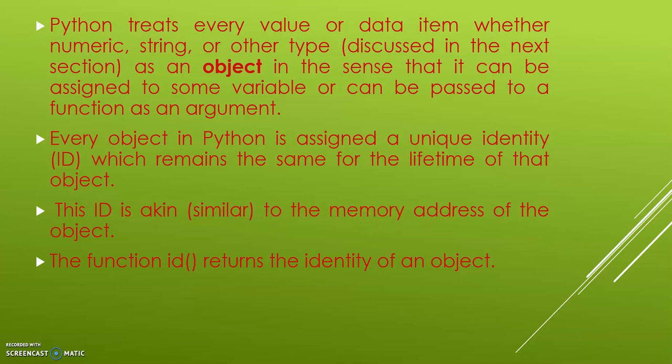You see, every value, every variable, every object has a memory address. That is where the value is being stored. And the function id() returns the identity of an object. Returns means it presents or gives an output.